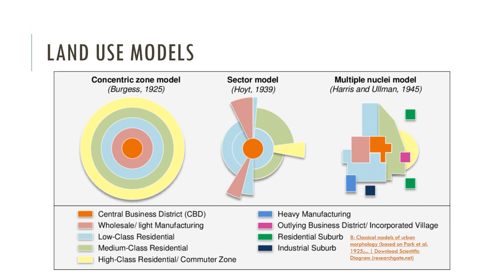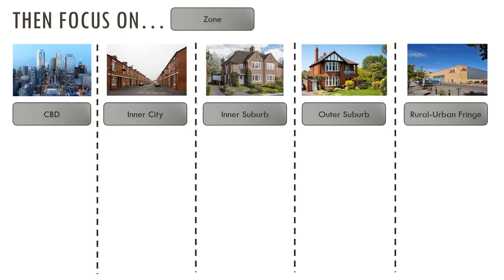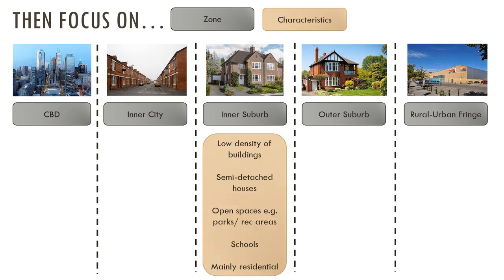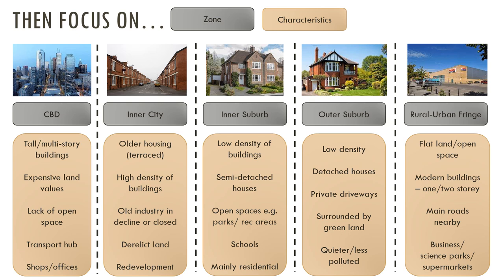The theory you should be looking at here is land use models. What makes the central business district unique compared to, say, light manufacturing areas or low-cost residential zones? How do you know you're in a medium-class residential area — what evidence do you have around you? Key things to consider are the location within the city, what clues you have, and the key characteristics of each zone. For example, in the central business district you know you're there because there are lots of tall modern buildings, it looks expensive, there's a lack of open space, and there are lots of shops and offices.